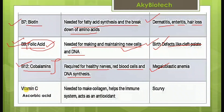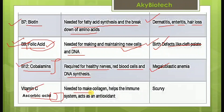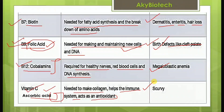Next is vitamin C — also known as ascorbic acid. It is needed to make collagen, helps the immune system, and acts as an antioxidant. Its deficiency leads to a disease known as scurvy.